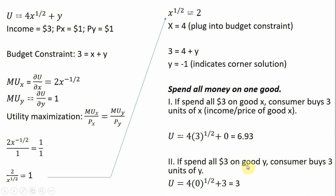If we spend all our money on good Y, we could afford 3 units of good Y, just the income divided by the price of good Y.